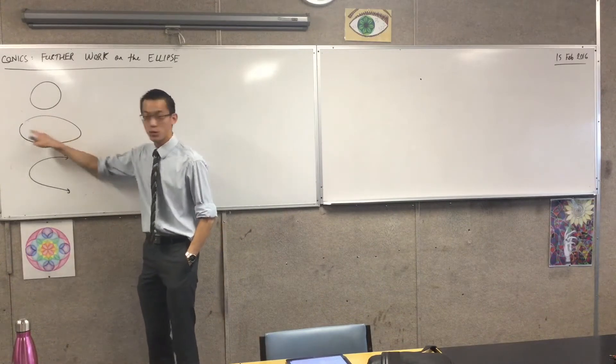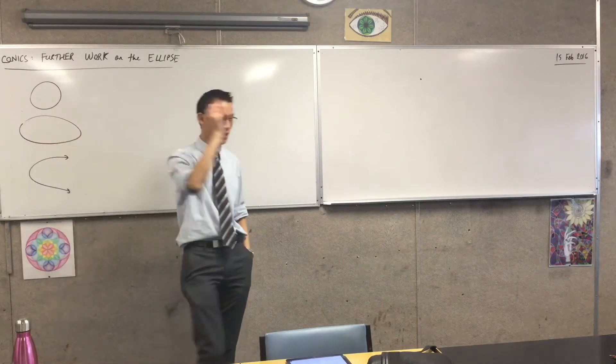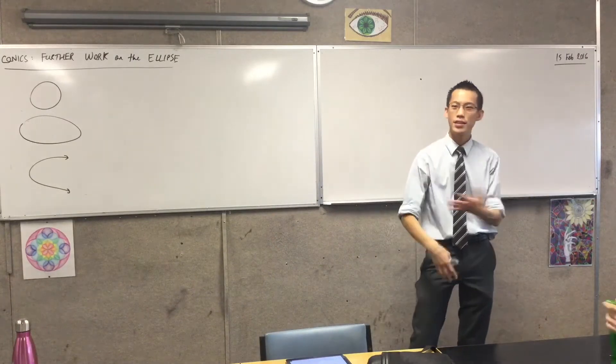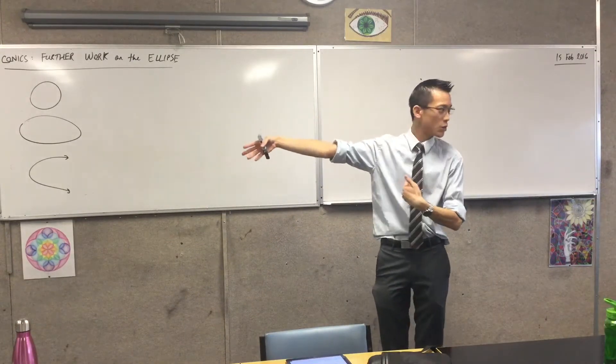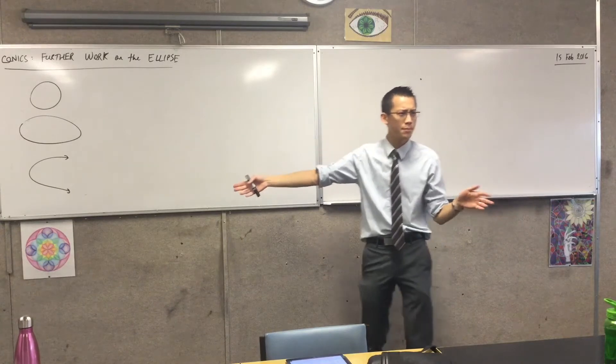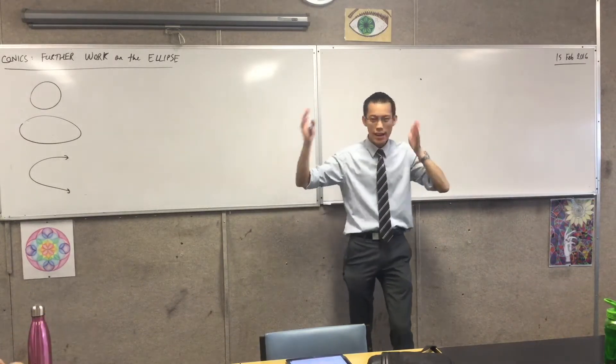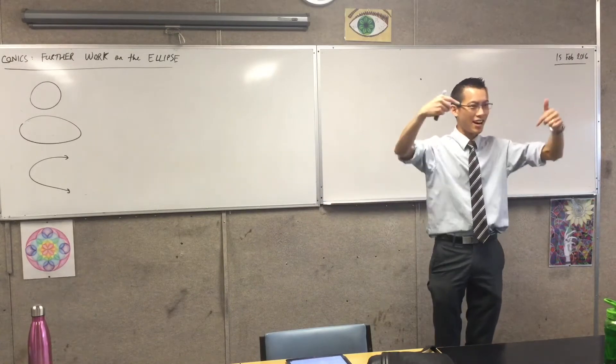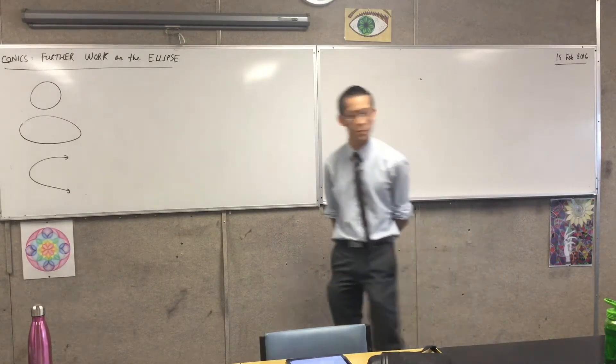If for example you're in two spots in a whispering gallery, two very specific spots, if you speak in a very quiet voice and someone at the other point - what were those two points? They were the foci, right? If you're at one of the two focuses, you can hear very clearly just by whispering.